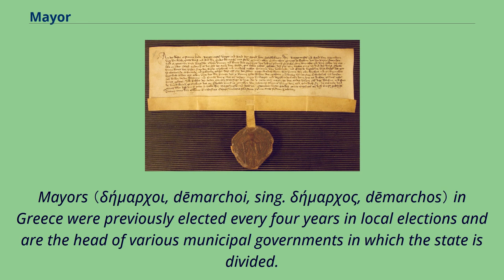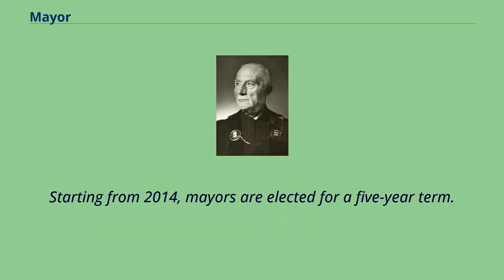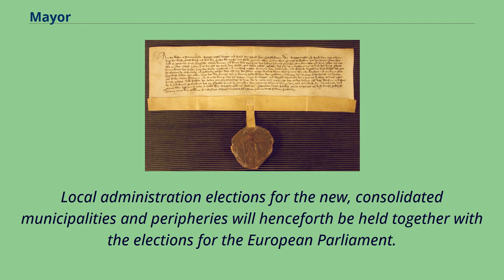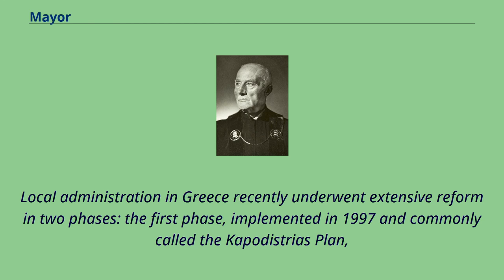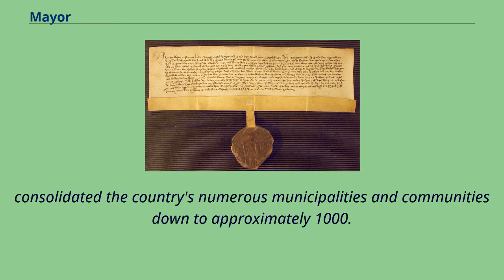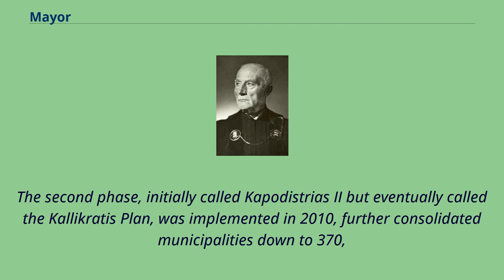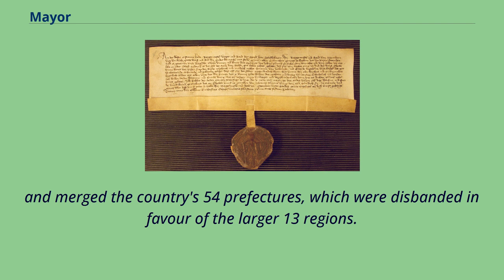Mayors in Greece were previously elected every four years in local elections; starting from 2014, mayors are elected for a five-year term. Local administration elections for the new consolidated municipalities and peripheries will henceforth be held together with the elections for the European Parliament. Local administration in Greece recently underwent extensive reform in two phases. The first phase, implemented in 1997 and commonly called the Capodistrias Plan, consolidated the country's numerous municipalities and communities down to approximately 1,000. The second phase, eventually called the Calicratis Plan, was implemented in 2010 and further consolidated municipalities down to 370, merging the country's 54 prefectures in favor of the larger 13 regions.